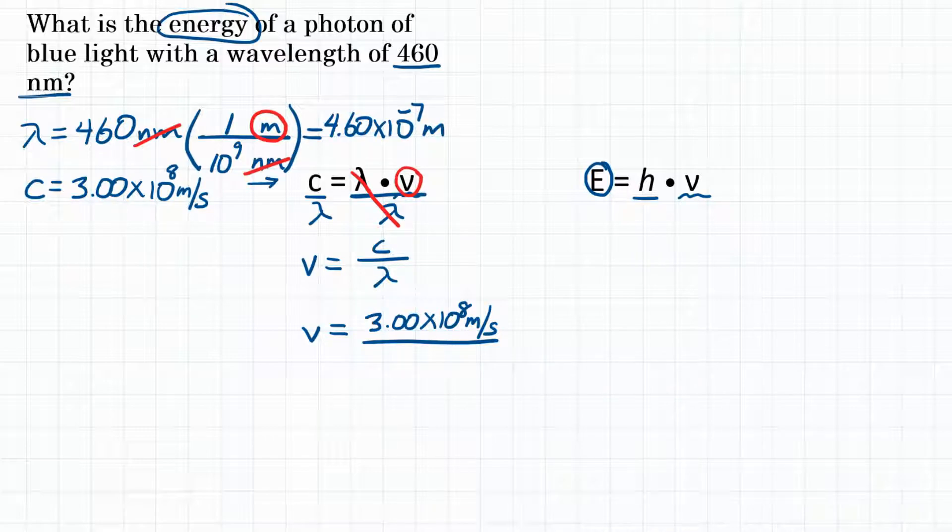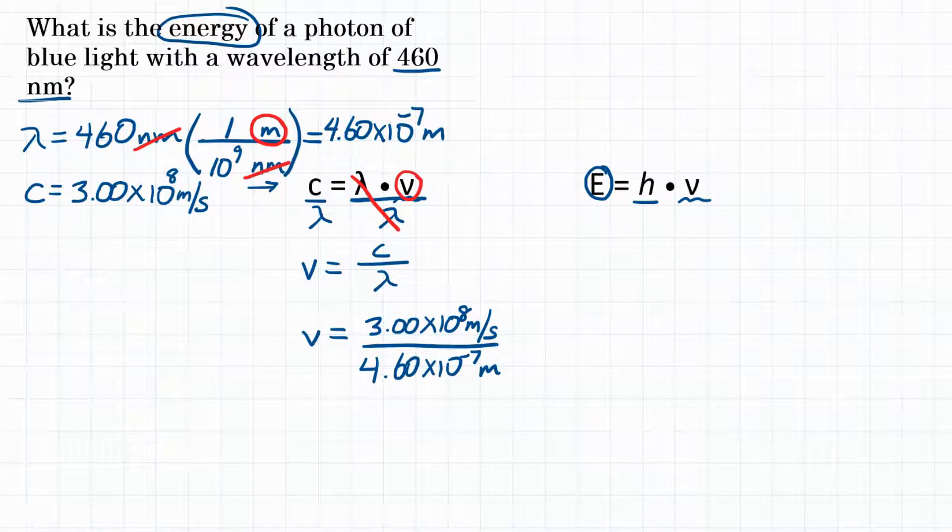So we can now plug that in our equation, 4.60 times 10 to the negative 7 meters. Because we have meters on top and on bottom of our fraction, they will cancel out, leaving us with just per second, which is also known as hertz, or seconds to the negative 1 power. So that will be our unit.